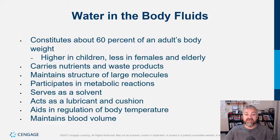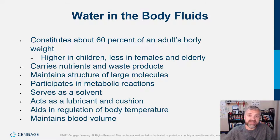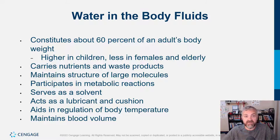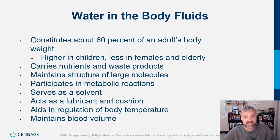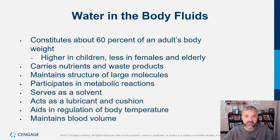Water constitutes about 60% of an adult's body weight — 50 to 70% depending on lean mass. If you have less muscle mass and more body fat, you'll be closer to 50%. If you have more muscle and less body fat, you'll be closer to 70%. You're close to two-thirds water. Water percentage is higher in children, lower in females and the elderly due to differences in lean mass.